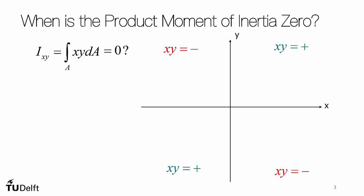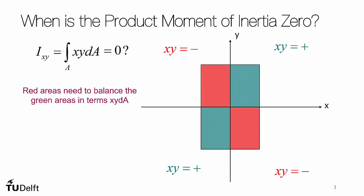So effectively, what the product moment of inertia being equal to zero means is if we have a cross-section, the two quadrants where the product is positive balance out in terms of x times y times dA with the two negative quadrants. These areas need to balance each other, but it's not just the area. It's the area times their x and y-coordinate.